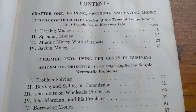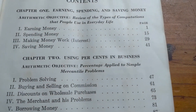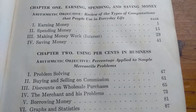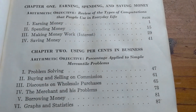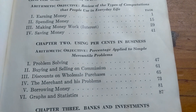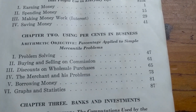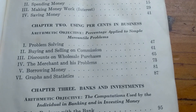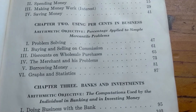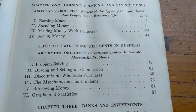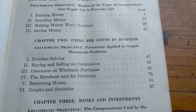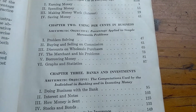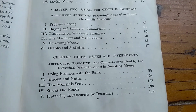Chapter two is on using percents in business — I love how it's two words. The arithmetic objective is percentage applied to simple mercantile problems. It covers problem solving, buying and selling on commission, discounts on wholesale purchases, the merchant and his problems, borrowing money, graphs, and statistics. Really useful math that anyone in the entire world can use, not just math people.